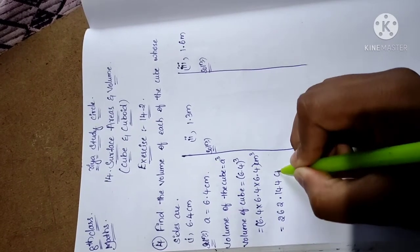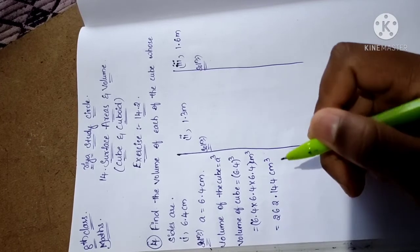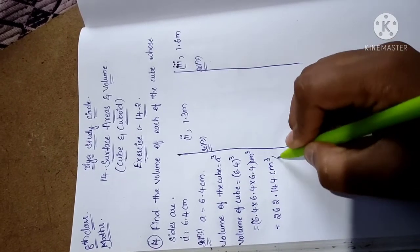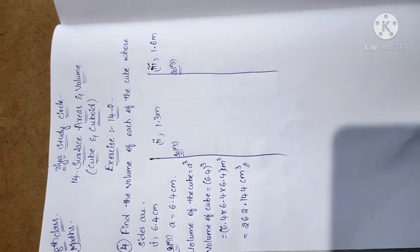262.144 cm³. This is the solution for this problem. Same as this, we have to solve the next problem where a equals 1.3 meters.